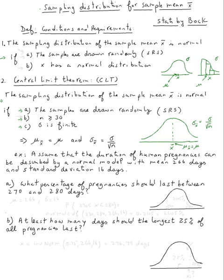Let's do this problem. Assume that the duration of human pregnancies can be described by a normal model, so we know it's normal and we just need to use that condition. We know x is normal — that's what it says.